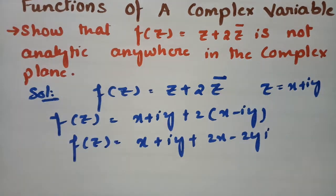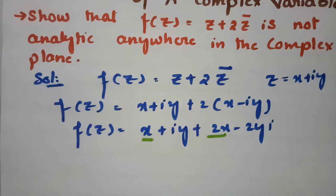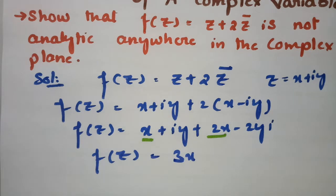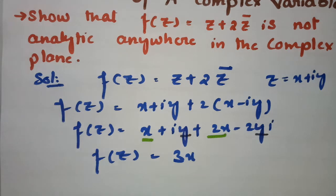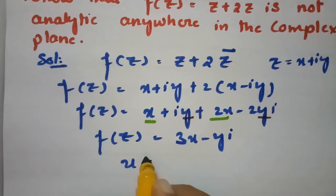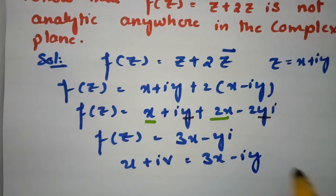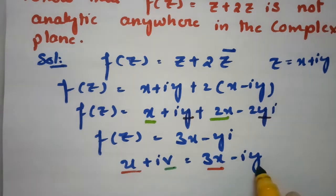So f(z) equals x + 2x, which is 3x, and then y − 2y which gives minus y times i. So f(z) = 3x − iy. Comparing with u + iv, we get u + iv = 3x − iy, so the real part is 3x and the imaginary part v is equal to minus y.